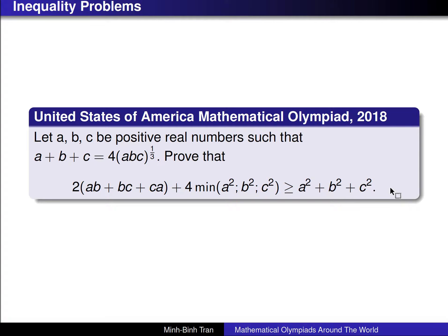We have three positive real numbers A, B, C that satisfy A + B + C = 4·(ABC)^(1/3). We need to prove that 2 times the sum AB + BC + CA, plus 4 times the minimum of A², B², C², is greater than or equal to A² + B² + C².